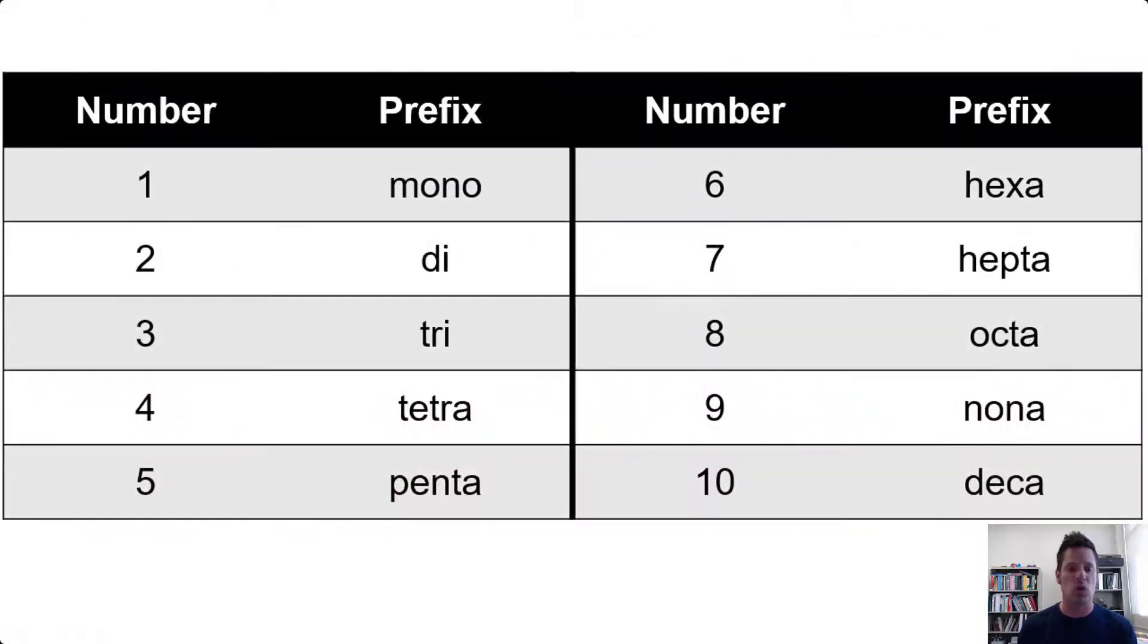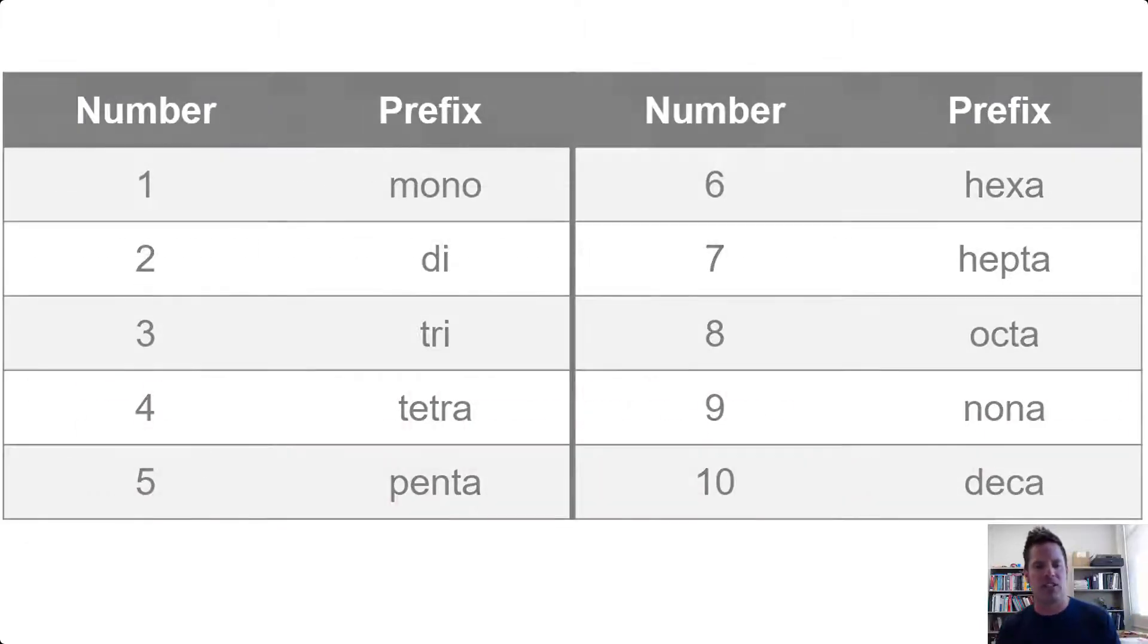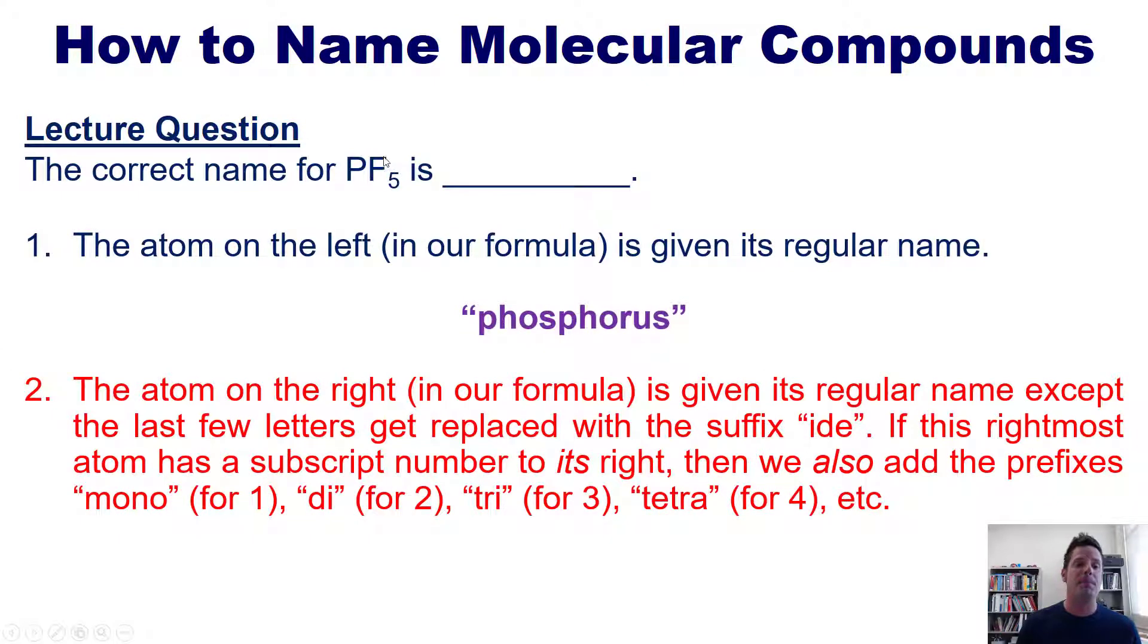Mono for one, di for two, tri for three, tetra for four, penta for five, hexa for six, hepta for seven, octa for eight, nona for nine, and deca for ten. So in this case, we have a pentafluoride. So the final correct name for this molecular compound is phosphorus pentafluoride. Make sense? Good.